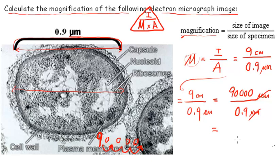What is 90,000 divided by 0.9? I can pause and edit this part of the video out but I'm not going to.